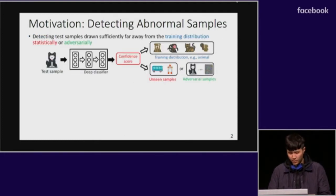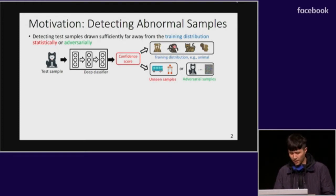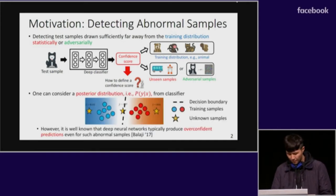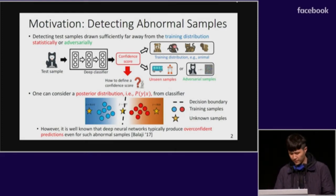Basically, this problem can be formulated as a one-class classification problem which detects abnormal samples at test time by measuring some confidence score from a classifier. The main challenge is how to define a confidence score for a test sample. In most applications, people utilize a posterior distribution from a classifier, P(Y|X), where X is an input and Y is its label.